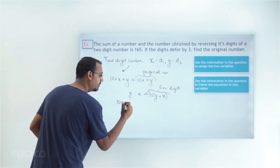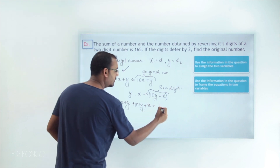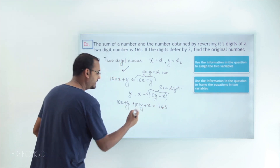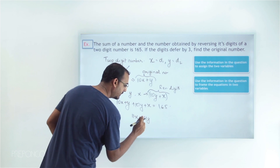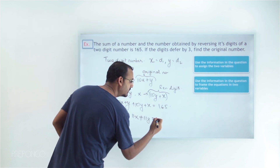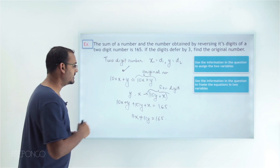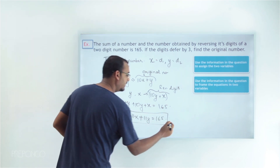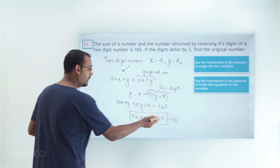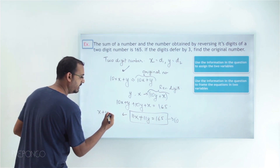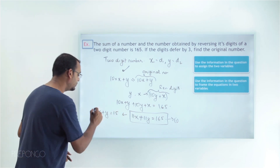The question tells us the sum of these two values is 165, so: 10x plus y plus 10y plus x equals 165. Simplifying, 10x plus x gives 11x, and 10y plus y gives 11y, so 11x plus 11y equals 165. This is the first equation. I can divide the whole equation by 11 to get x plus y equals 15.